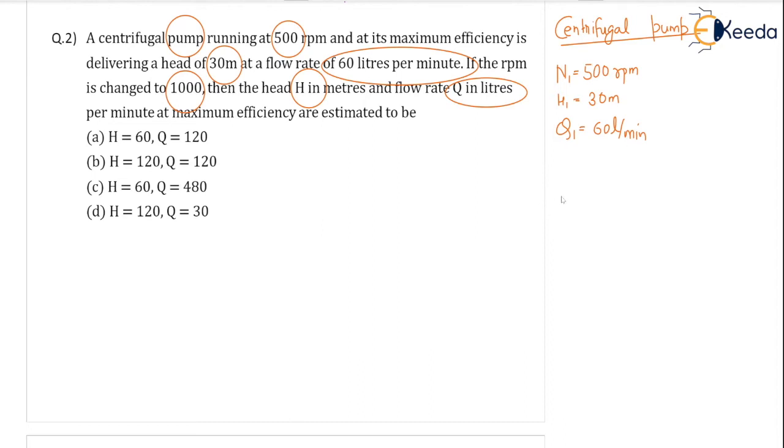If the rpm is changed to 1000, second case, rpm is changed to 1000. Then you have to find h2, value of h2 in meters and the flow rate q2 in liters per minute. That is the question.